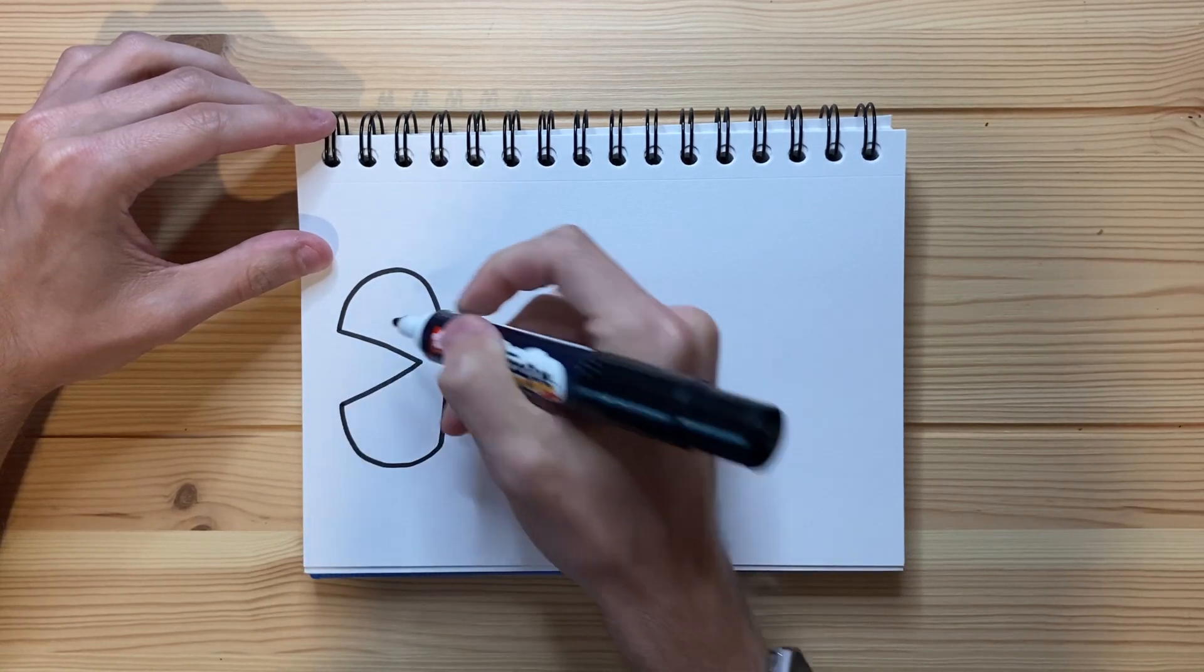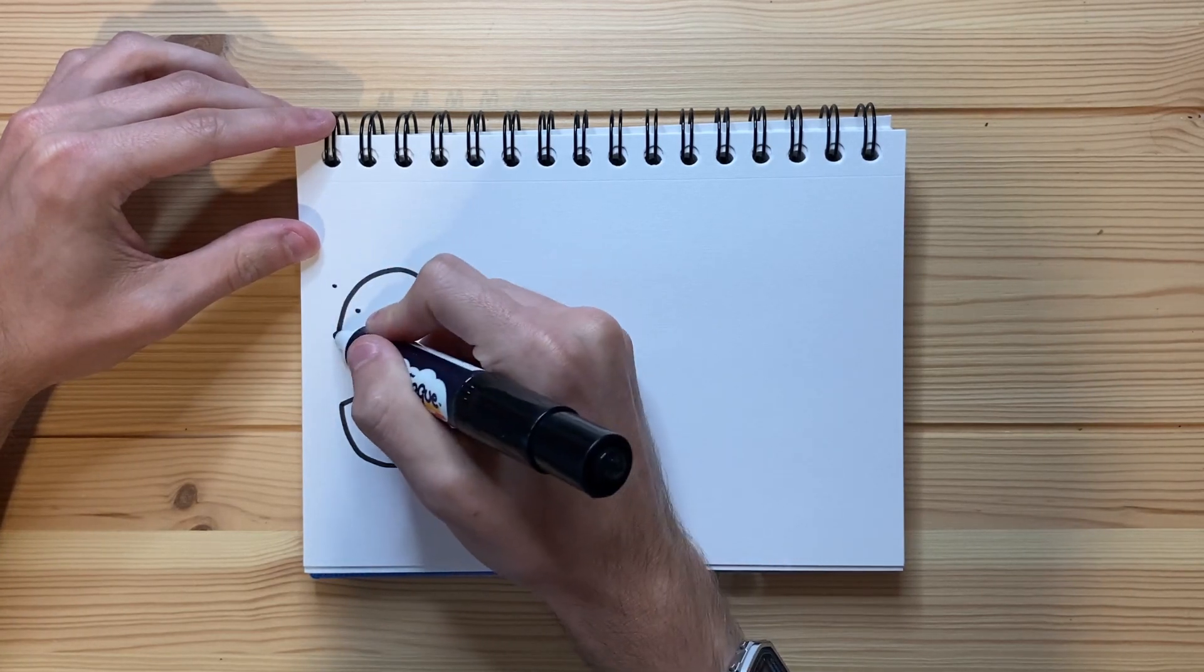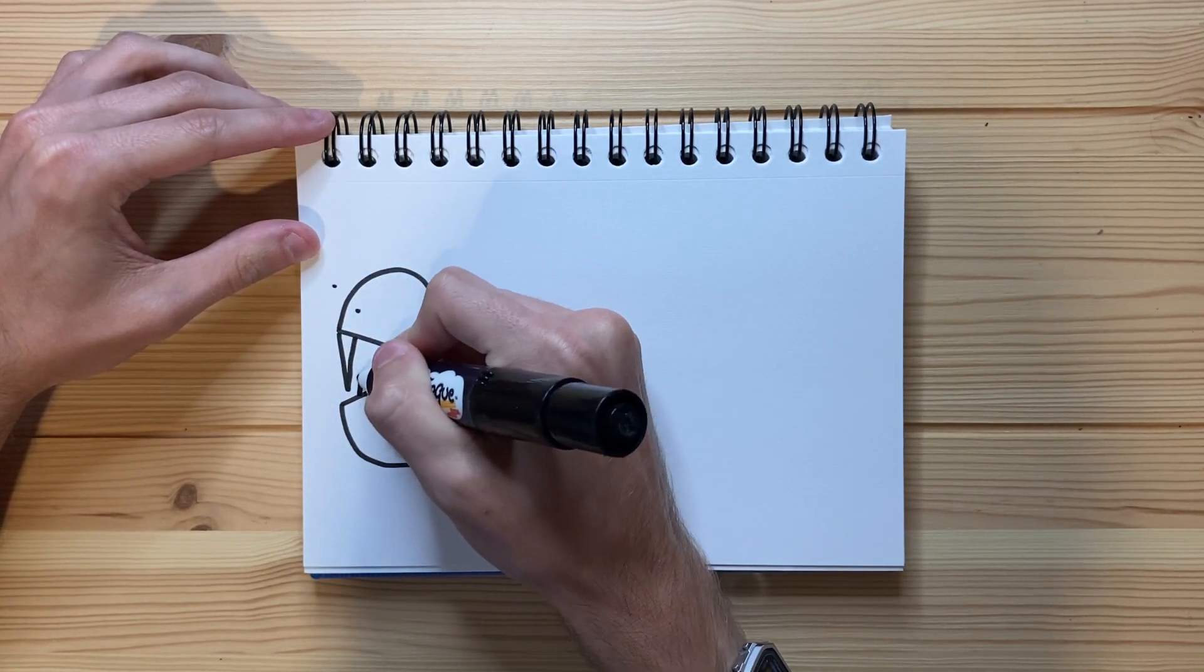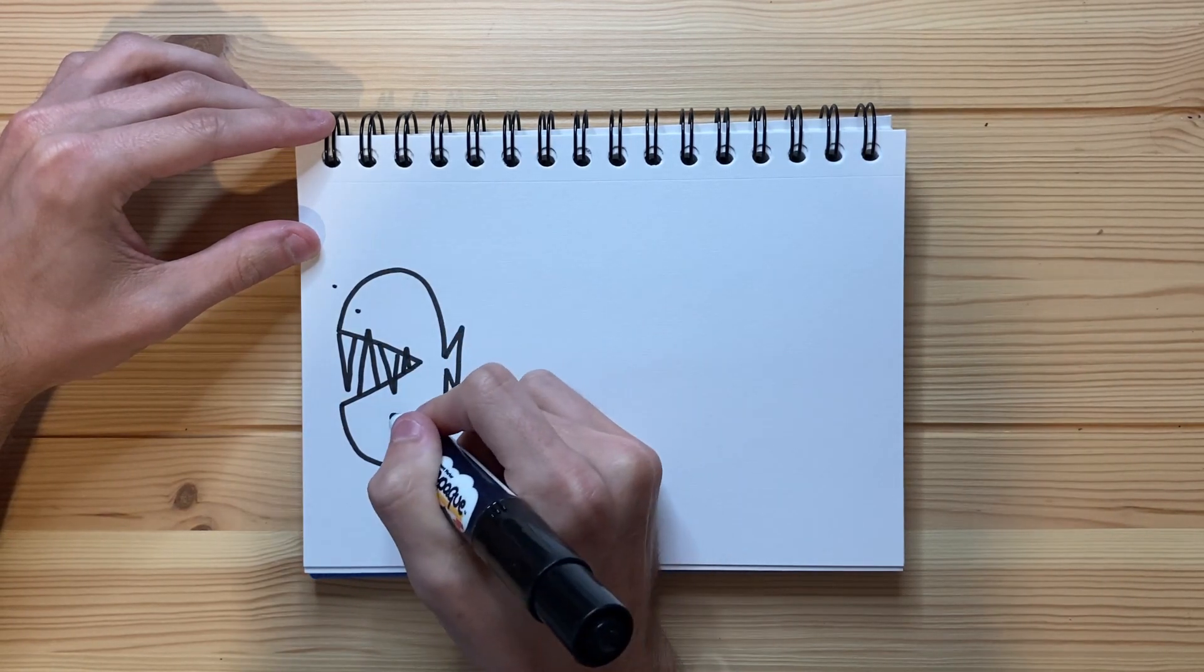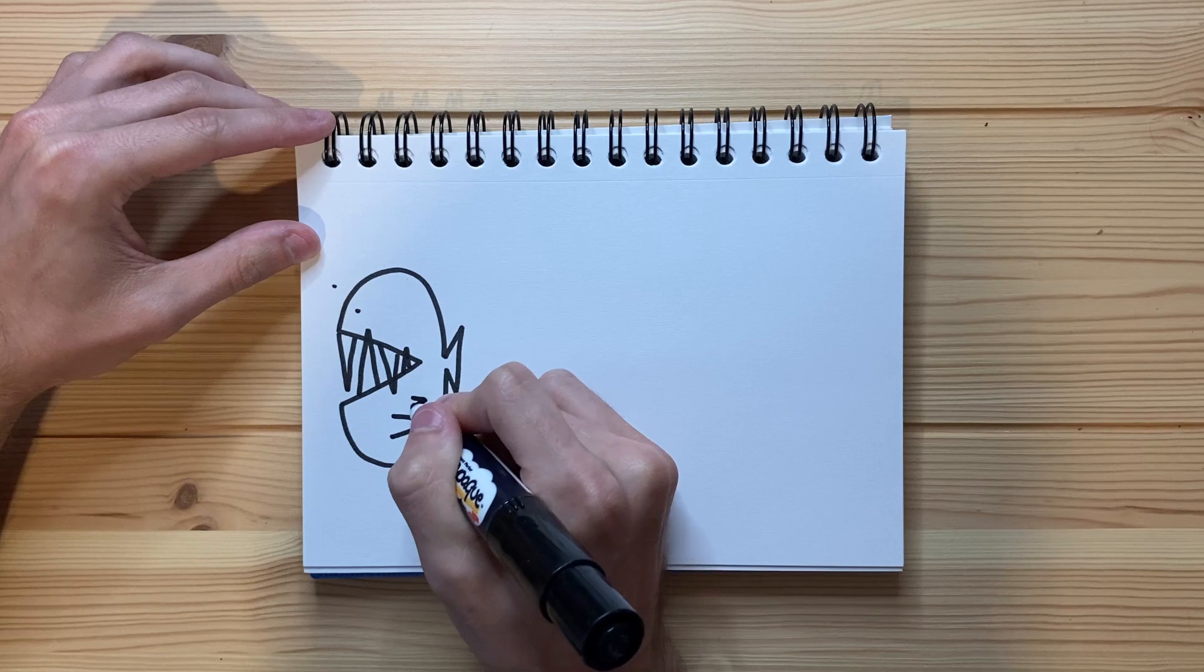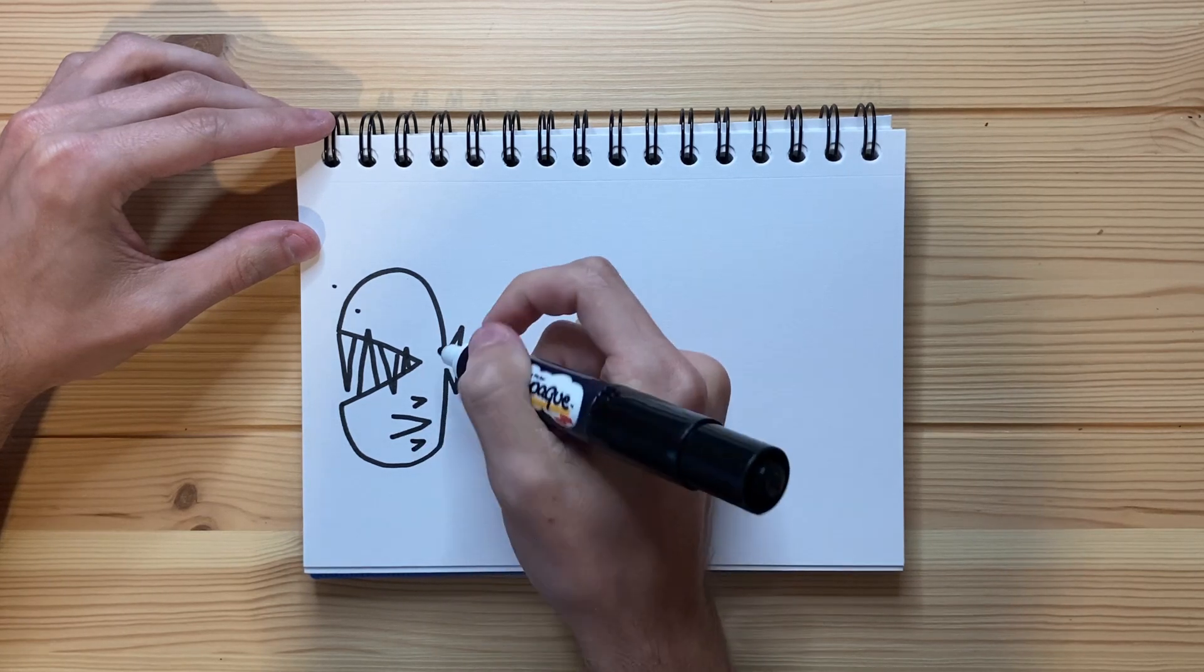There we go, get his tail going and just wrap it all the way around. Eye, eye. Just like that. I think I might have drawn him a little bit too big by accident, but it is what it is.